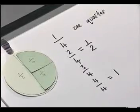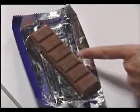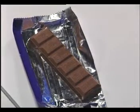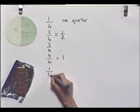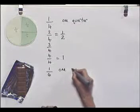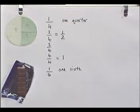Let's have a look at another illustration. Here I have a bar of chocolate. It's been divided into six pieces of equal size, so we've taken a whole bar and divided it into six pieces, so each piece is one sixth. Now let's say I'm going to share my bar of chocolate with the cameraman.